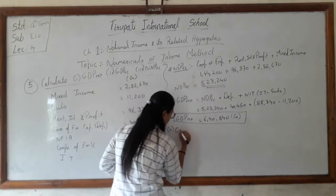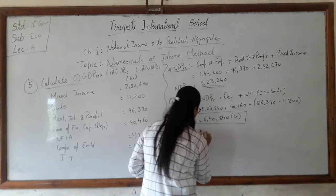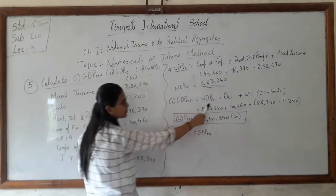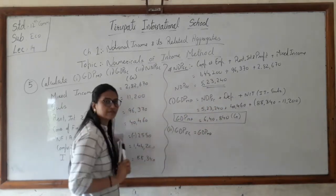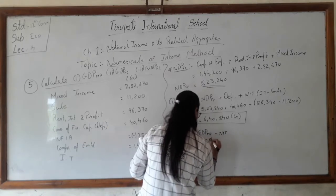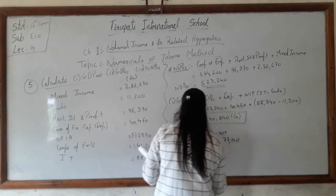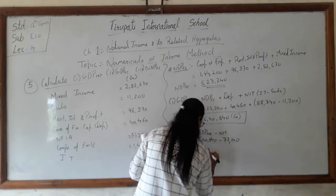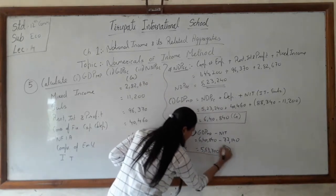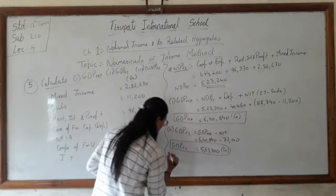Second question: GDP at FC. Since we already have GDP at MP, we simply subtract NIT. GDP at FC = GDP at MP minus NIT = 6,40,840 minus 77,140 = 5,63,700 crores. This is our GDP at FC. Write the final answer in a box.